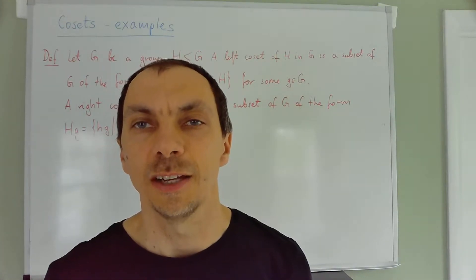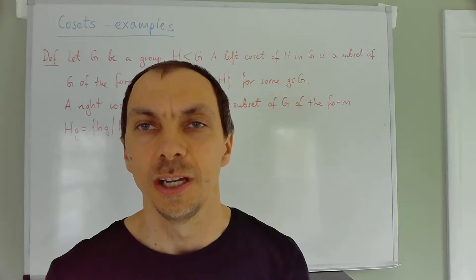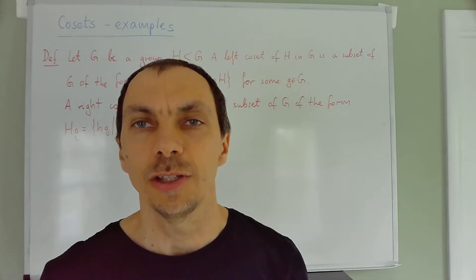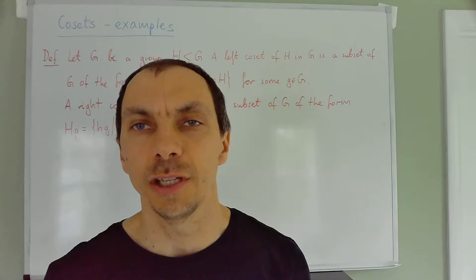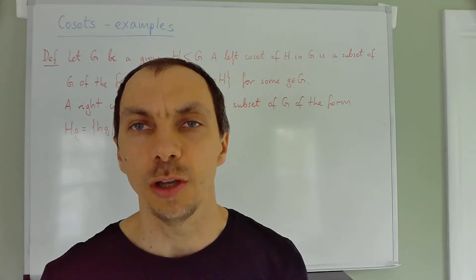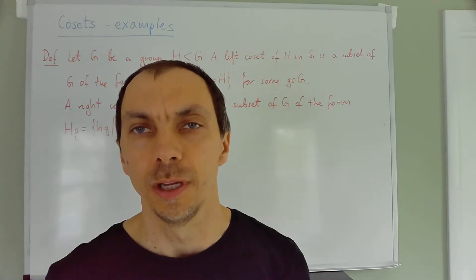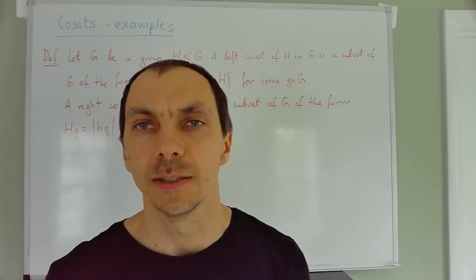Congruence classes are certain subsets of the integers that have some nice properties. It turns out there exist generalizations of the concept of a congruence class that work not only for the group of integers but actually for any group. This generalization is called a coset.